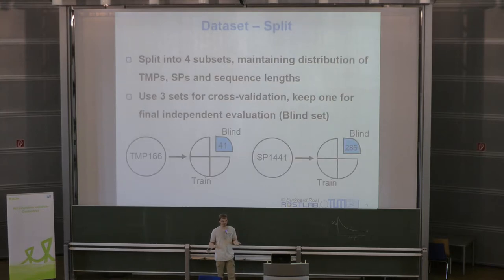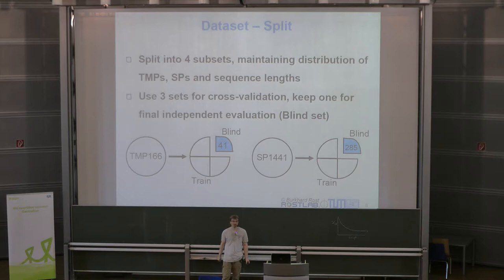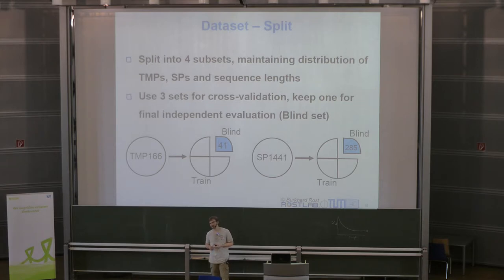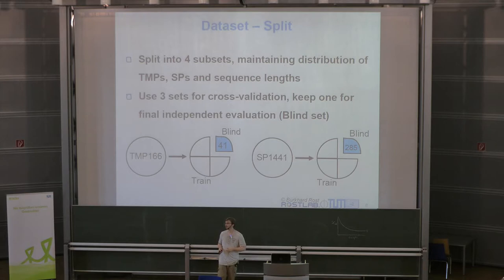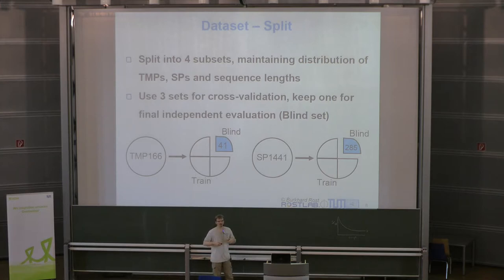With the dataset complete — 166 experimentally defined transmembrane proteins and roughly 1,400 from the SignalP dataset — I reserved 25% as a blind test set and used the remaining 75% in threefold cross-validation to optimize parameters for the different machine learning tools.